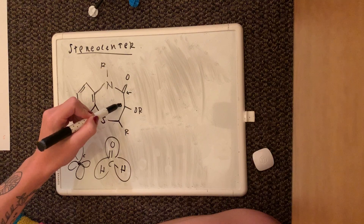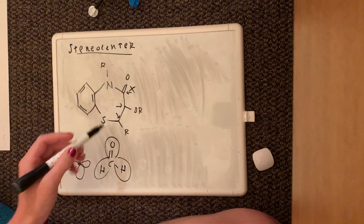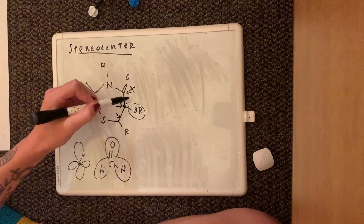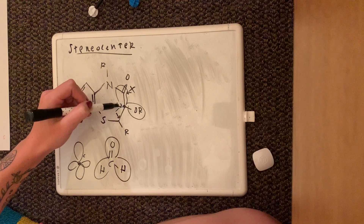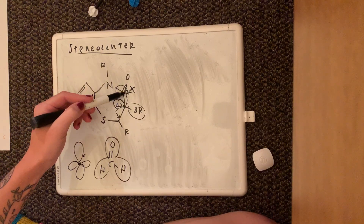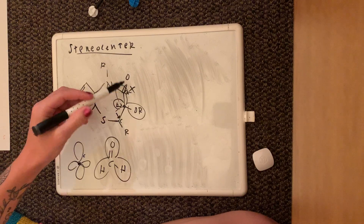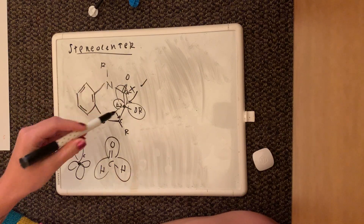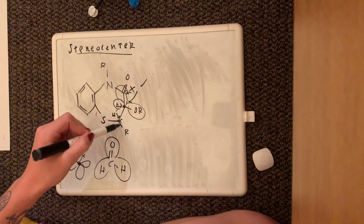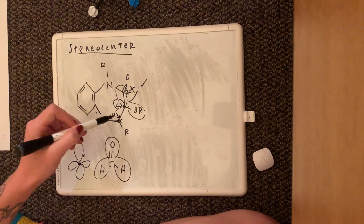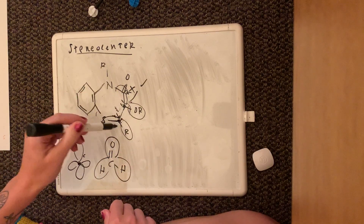We know those double-bonded carbons are not going to be stereocenters, so let's check the other carbons. This one has a double bond — no. This one has an OR group, a carbon-oxygen group, a carbon with an R group, and an H, so even though some of these are both carbons at their immediate ends, we know these are all different substituents — so this is a stereocenter. The next carbon has an imaginary H and different R groups branching off, also four different substituents.